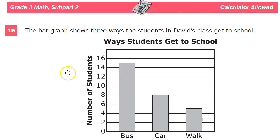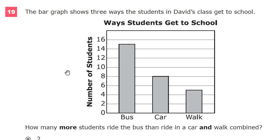The question says the bar graph shows three ways that students in David's class get to school. They either ride the bus, go in a car, or they walk. How many more students ride the bus than ride in a car and walk combined?